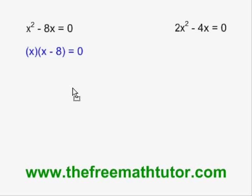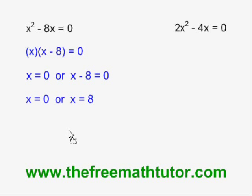Then I do the split: x equals 0 or x minus 8 equals 0. x equals 0 tells me my answer — one of my roots in this case is at the origin. x minus 8 equals 0 must be simplified; I move the minus 8 to the other side and I get x equals 8. So my two answers are 0 and 8. These are the roots of this quadratic equation.